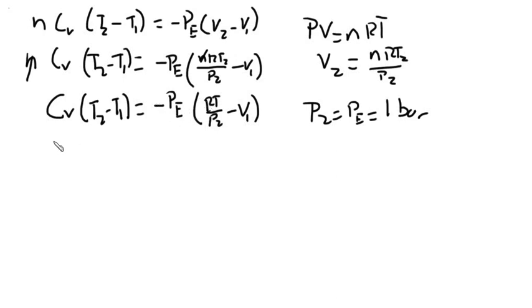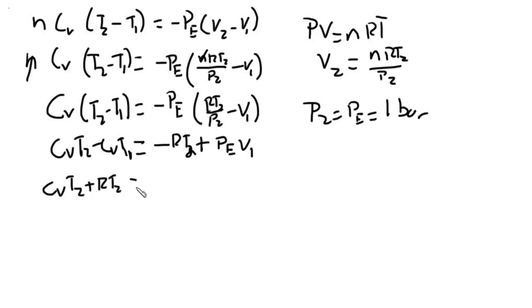Then if we factor this out, Cv T_2 minus Cv T_1 is equal to, then the P_E would cancel out with the P_2, so we get minus RT_2 plus P_E V_1. And now, we're trying to find T_2, so if we rearrange this equation, we get Cv T_2 plus RT_2 equal to P_E V_1 plus Cv T_1.